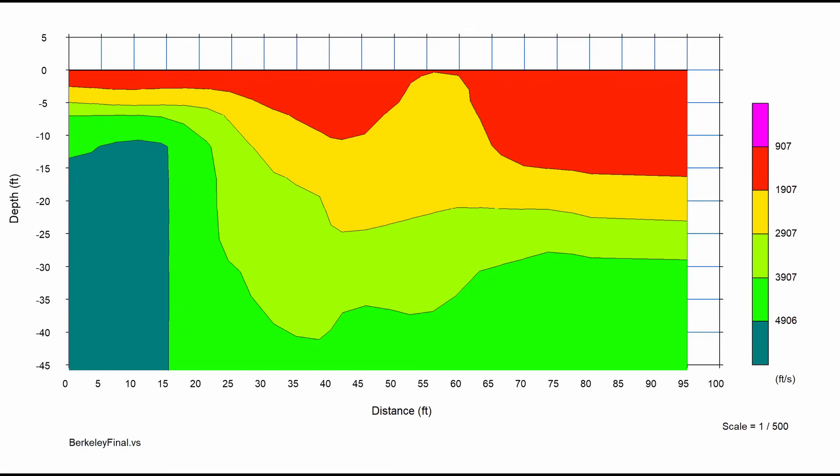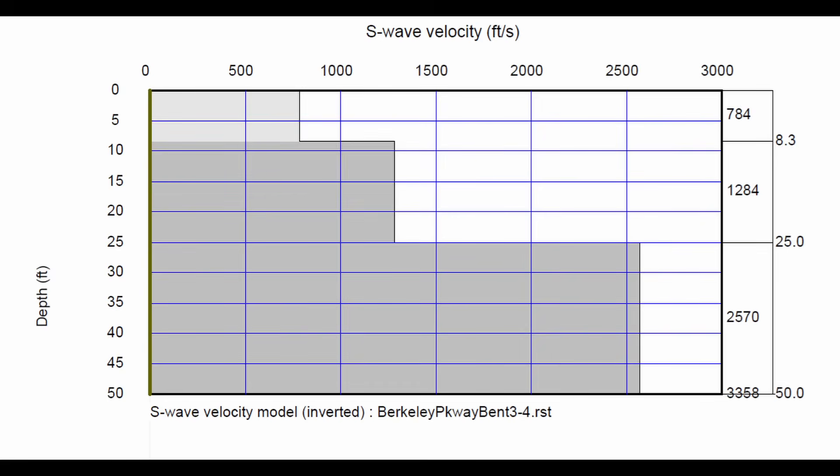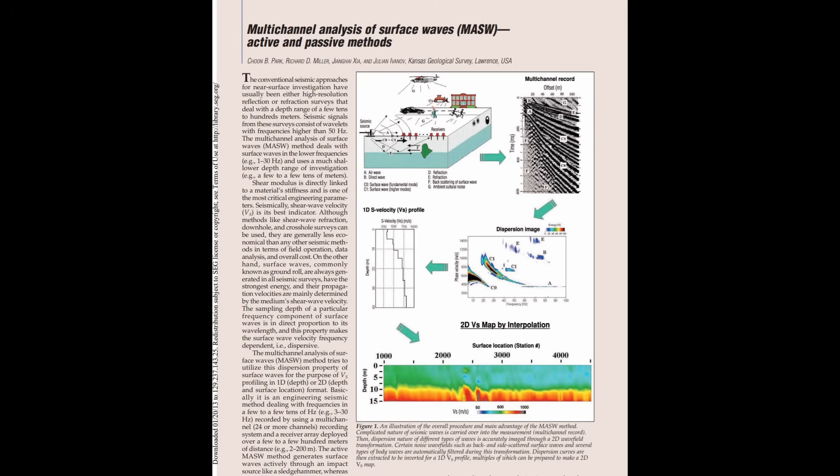My son also used a different type of analysis called MASW to analyze the data, which produces an overall average transition between the overburden soils — compacted clays and gravelly soils — overlying weathered bedrock at a depth of about 25 feet below ground surface. MASW stands for Multi-Channel Analysis of Surface Waves, and there are both active and passive methods for generating that data.